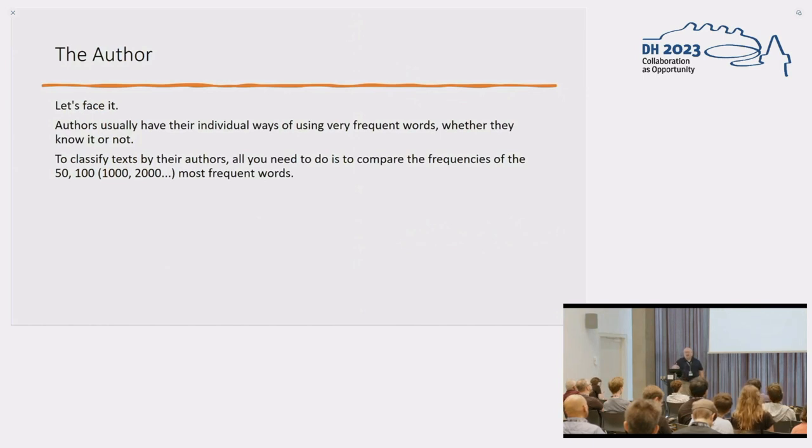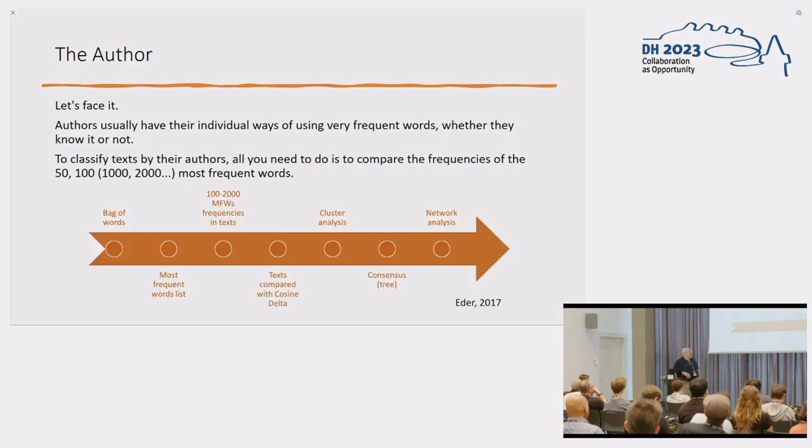I'm hoping that the audience has at least been touched by the stylometric mafia somehow in their life, so I won't be showing how the Burrows delta is done. If you don't believe in that, you have to believe it for the next 20 minutes. Authors make their text characteristic by their frequent words, and the workflow I'll be using is described by Eder in 2017: counting very frequent words, comparing their frequencies in texts, putting together a cluster analysis, and then converting that into a network analysis so you get pretty pictures.